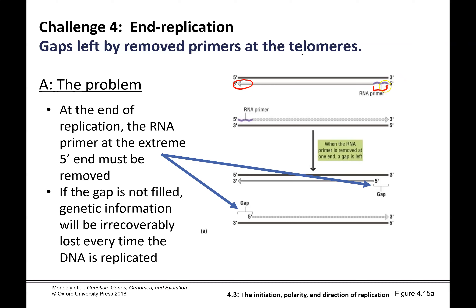On the lagging strand you're going to fill in all of your Okazaki fragments where your RNA primer was and ligate your sections together. But no matter what happens, you're going to be left with an RNA primer on each of the five prime ends of one of the sides of each of your daughter strands. So we have to get rid of that RNA.